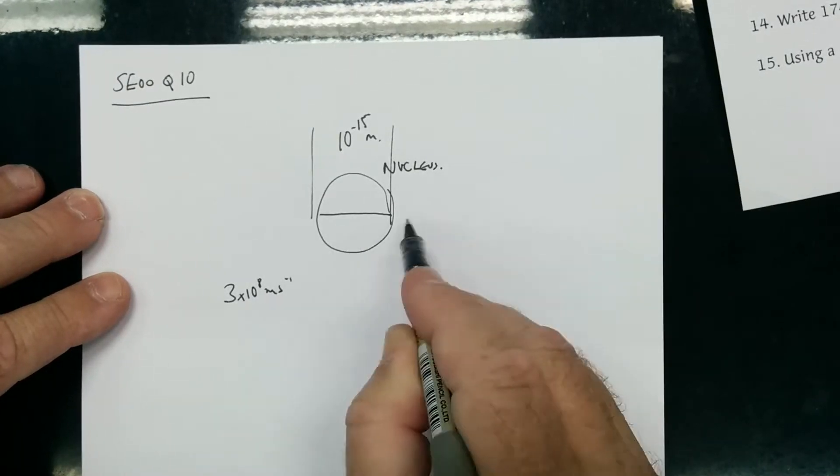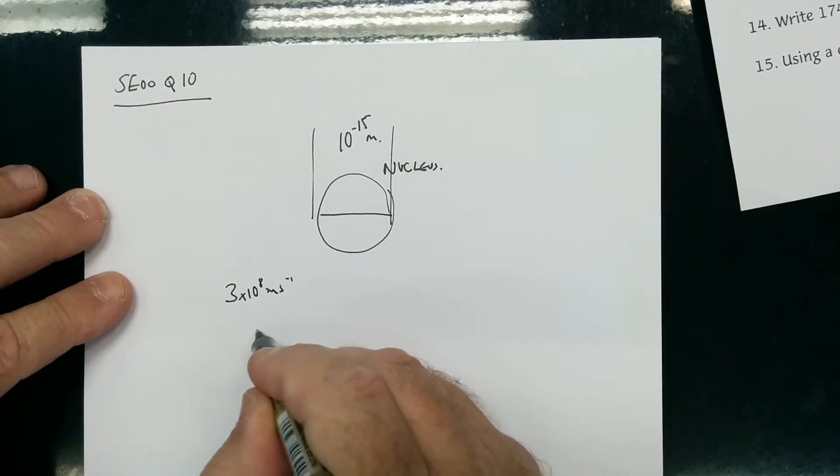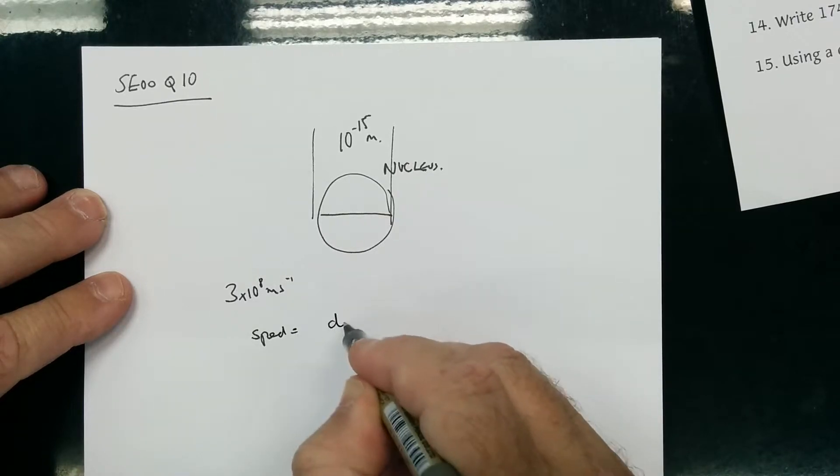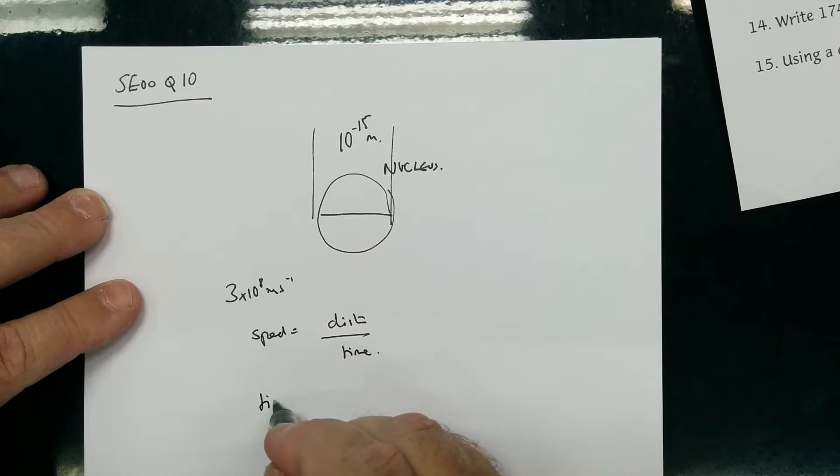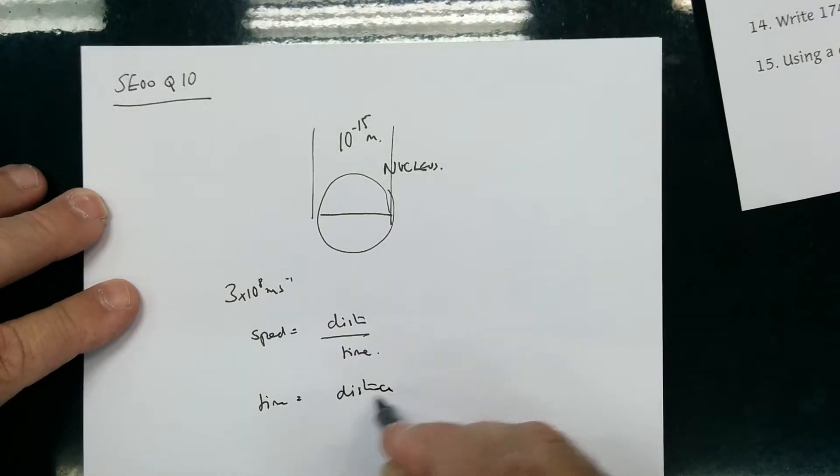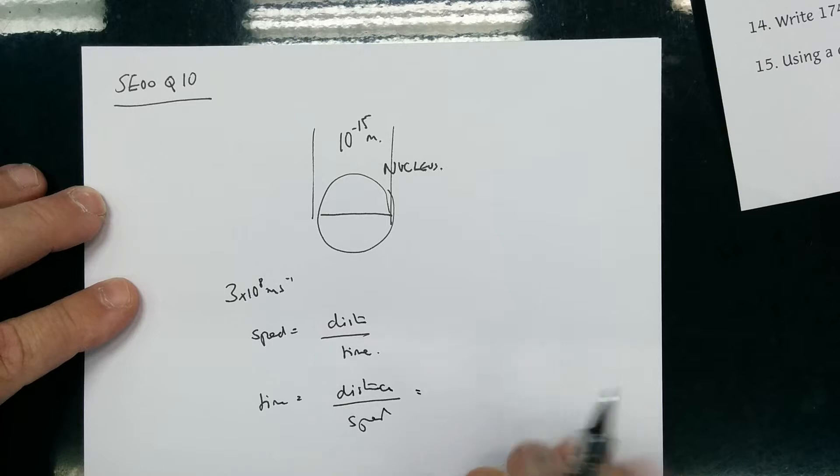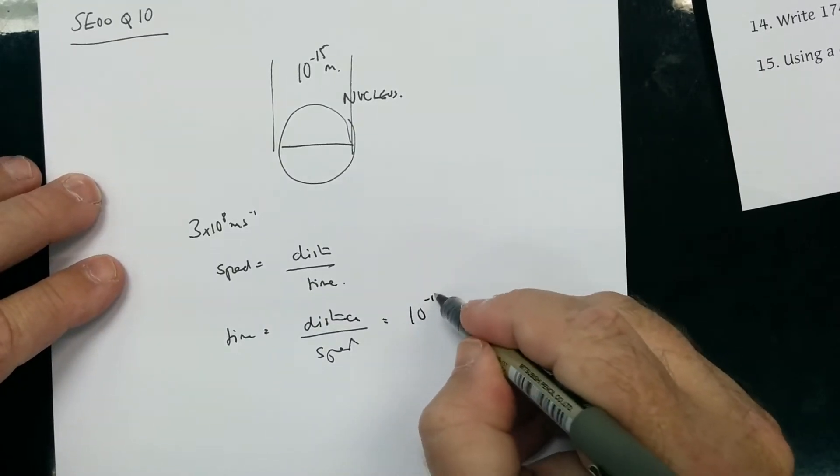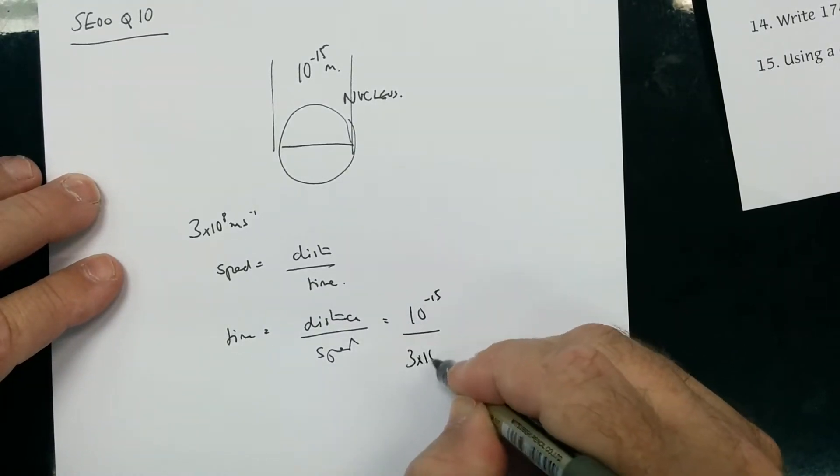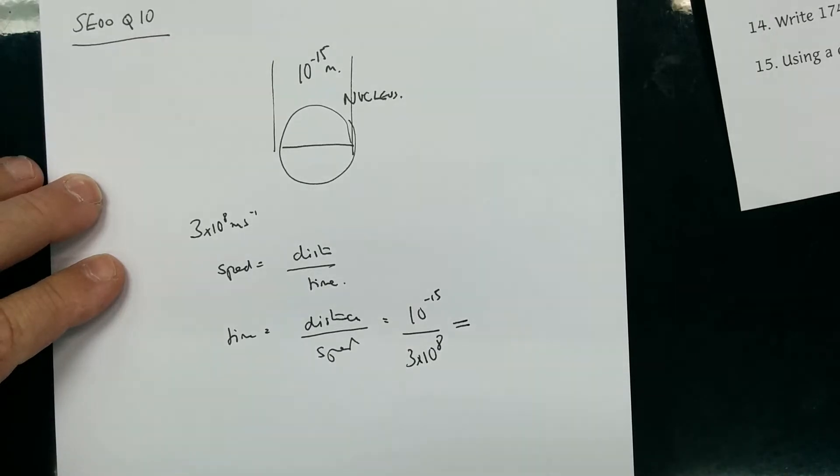Speed equals distance over time, so time is equal to distance over speed, equals 10 to the minus 15 over 3 times 10 to the 8, which should give you 3.3 times 10 to the minus 24 seconds.